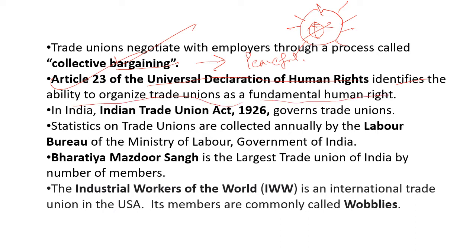Article 23 of the Universal Declaration of Human Rights identifies the ability to organize trade unions as a fundamental human right. In India, the Indian Trade Union Act 1926 governs trade unions and their provisions. Labor courts have come, so these laws will be replaced. Statistics are maintained by the Labor Bureau in the Ministry of Labor. Bharti Majdur Sangh is the largest trade union in India.